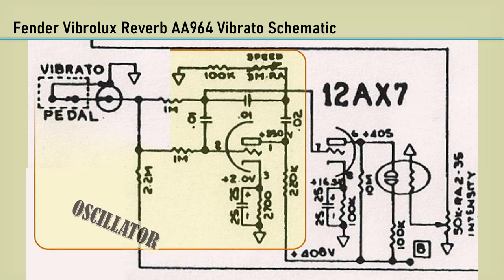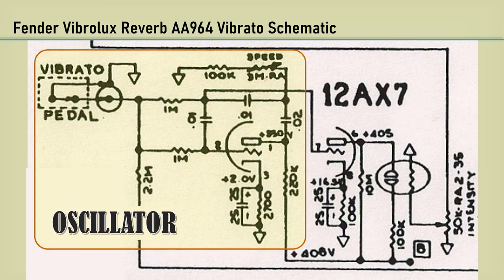Here's a clip of the oscillator schematic for a Fender Vibrolux Reverb chassis number AA-964. Although this is a specific schematic, the same identical oscillator circuit was used in most Fender amplifiers back in the day of tubes.